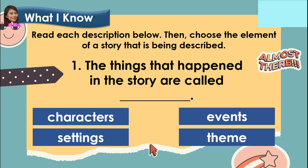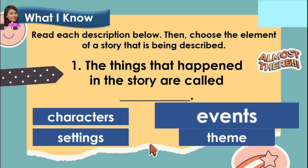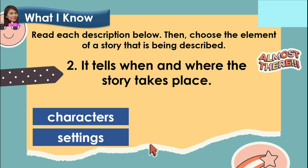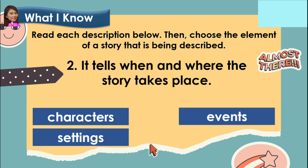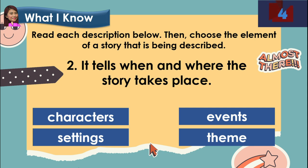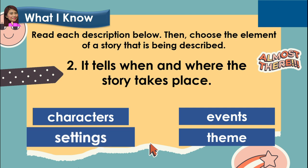And the correct answer is events. Number 2: it tells when and where the story takes place. Is it characters, settings, events, or theme? And the answer is settings.